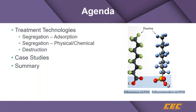Longer chain PFAS are easier to remove than short chain, and the longer chain are also considered more toxic than the short chain. In many technologies, some of the long chain may be converted to short chain PFAS. Looking at the structure, the head can be either carboxylate or sulfonate.